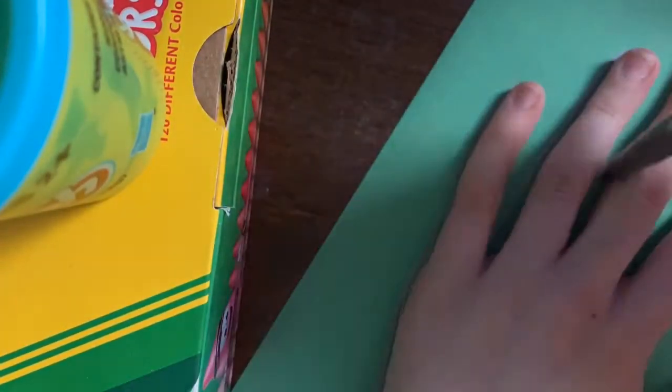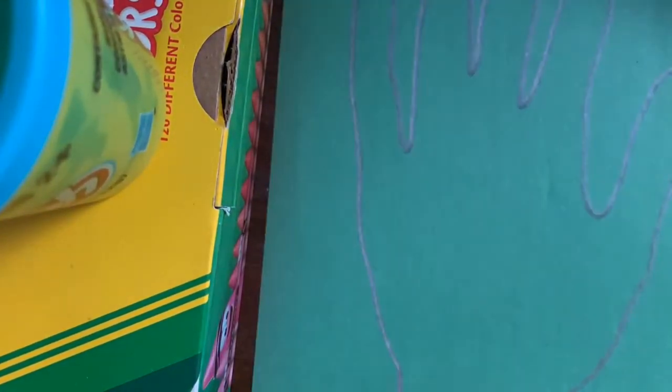Okay, so now we're going to trace one of our hands. And I put a second sheet of paper underneath and cut out both on top. But if it's easier, you can just trace two hands and then cut those out.